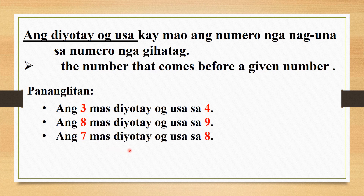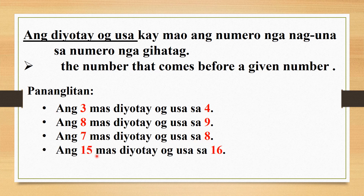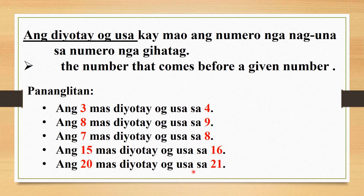Ang 7, mas jutay o gusa sa 8. Ang 15, mas jutay o gusa sa 16. Ang 20, mas jutay o gusa sa 21. So if we reverse it: ang 4 mas labaw o gusa sa 3, ang 9 mas labaw o gusa sa 8, ang 8 mas labaw o gusa sa 7, ang 16 mas labaw o gusa sa 15, ang 21 mas labaw o gusa sa 20. So bali-bali ra siya — ang naguna sa numero, maoy mas jutay o gusa; ang sunod sa numero, maoy mas labaw o gusa.